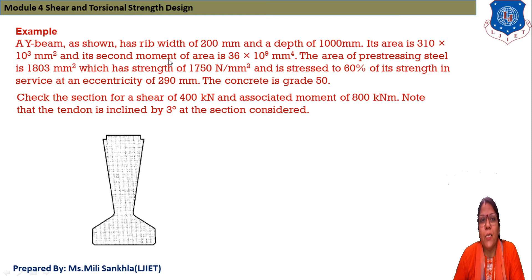Its area is 310 × 10² mm² and second moment of area is 36 × 10⁹ mm⁴. Area of prestressing steel is 1803 mm² which has strength 1750 N/mm² stressed to 60% of its strength in service at eccentricity of 290 mm. Concrete grade is 50. Check the section for shear of 400 kN and associated moment of 800 kN·m.